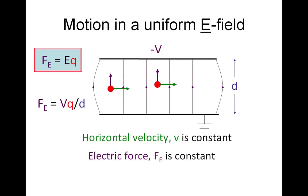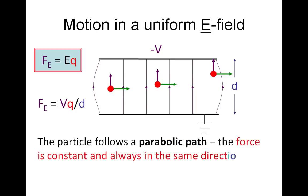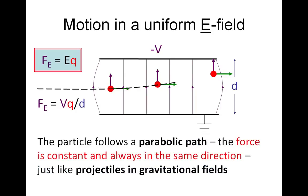The horizontal velocity stays constant, and the electric force stays constant. So our particle moves upwards as it moves to the right, following a parabolic path. This is because the force is constant and always in the same direction, exactly the same as projectiles in gravitational fields.